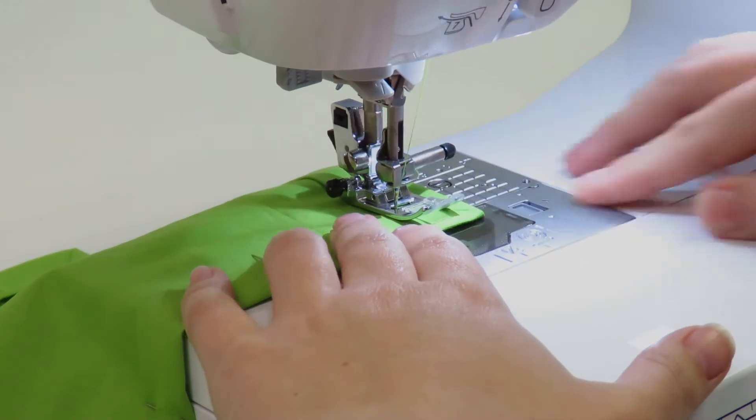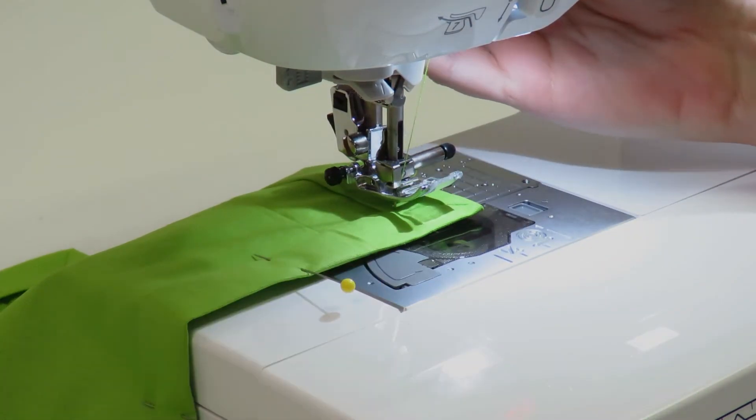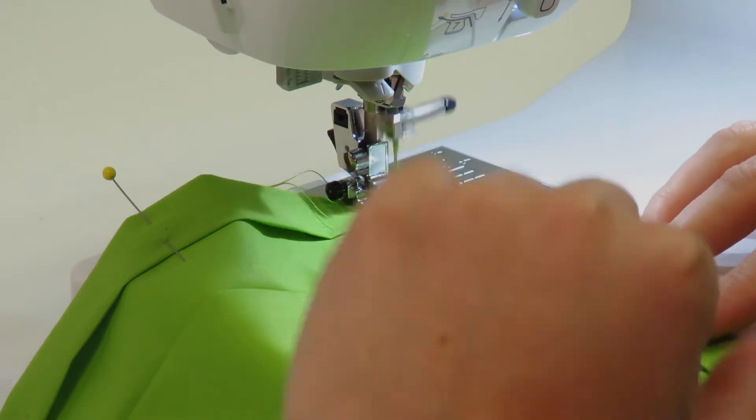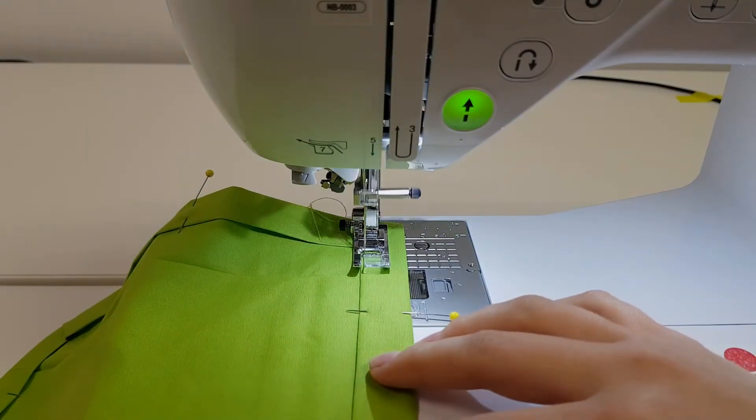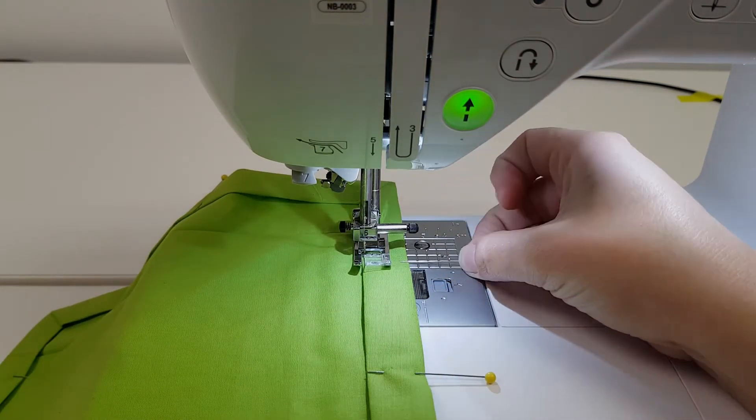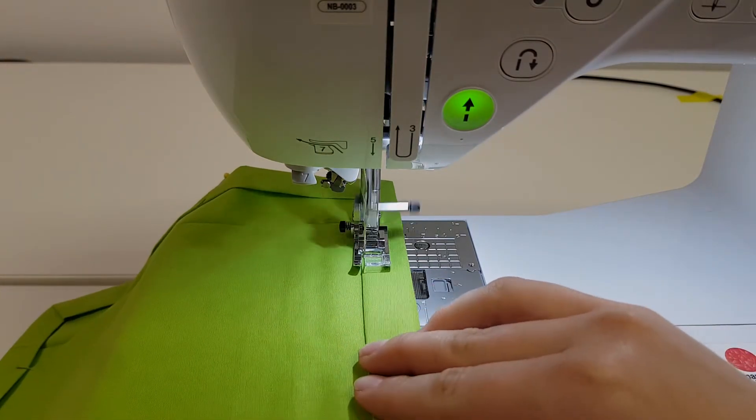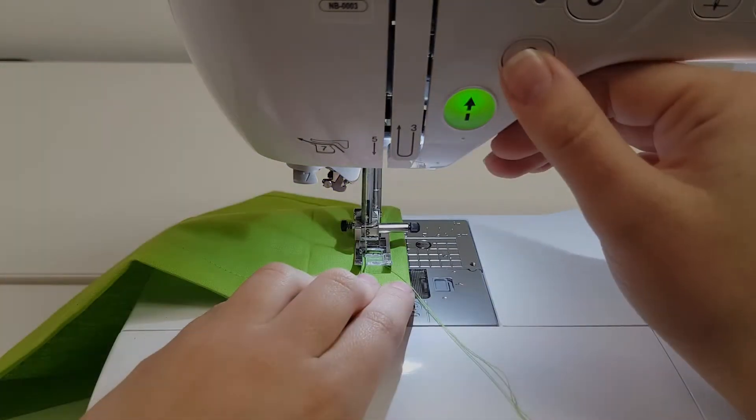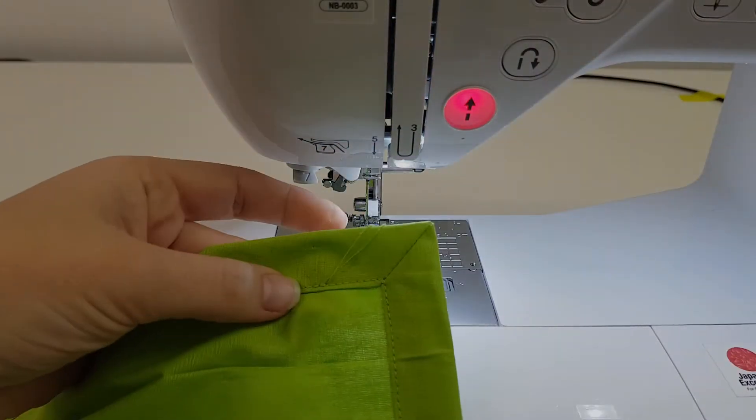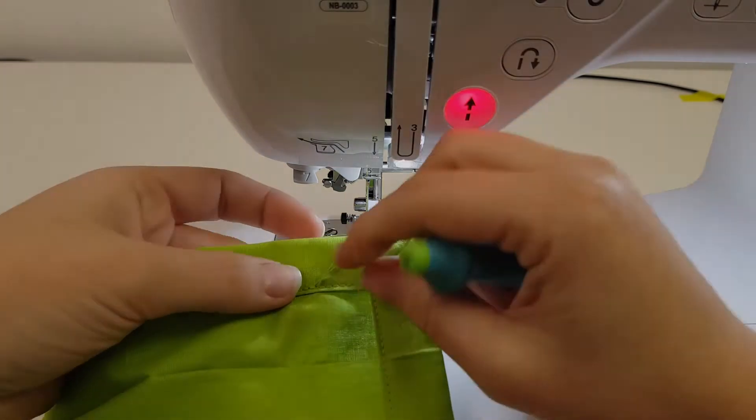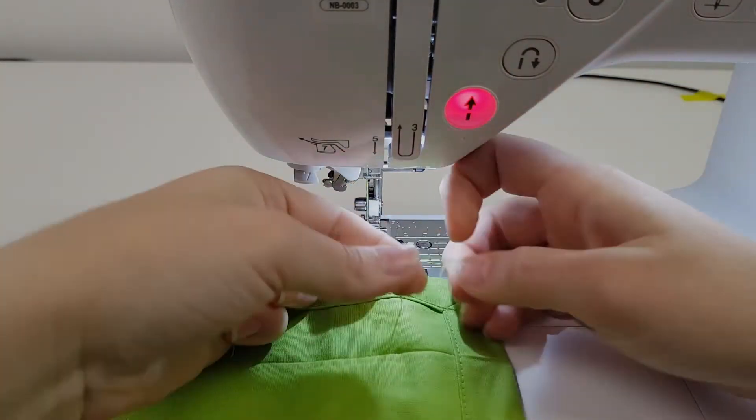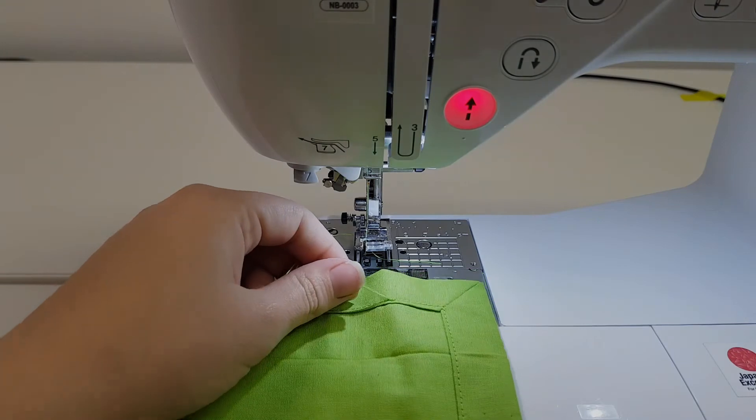You can also use a decorative thread to stitch the seam allowance. Your serviette with its mitered corners is now complete. It is now time to continue to your embroidery machine.